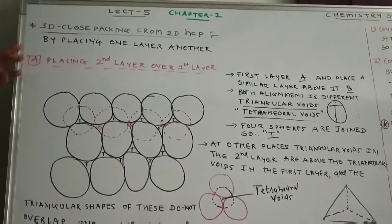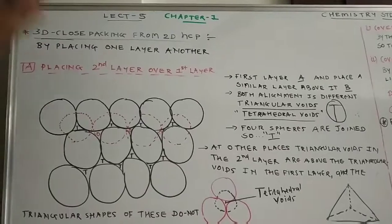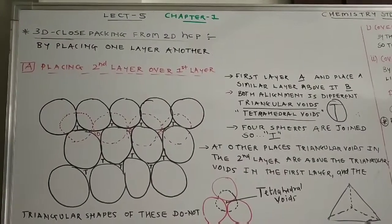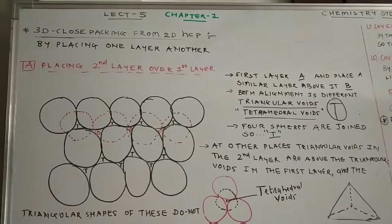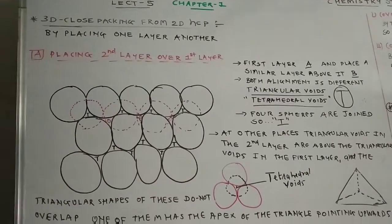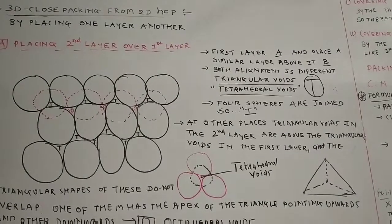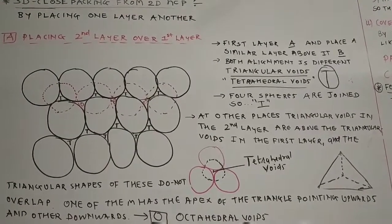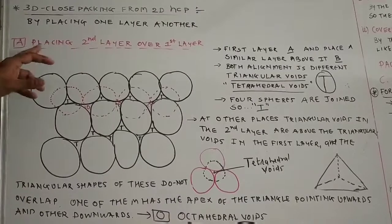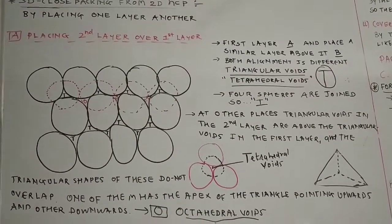How can we do this? By placing one layer over another layer. This can be achieved in two ways: the first way is placing the second layer over the first layer, and the second way is placing the third layer over the second layer. So let's start from the first one — placing the second layer over the first layer.